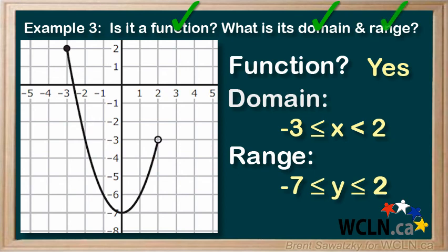And the range is between negative 7 and 2. With them both being inclusive points. So, we would say that y is equal or greater than negative 7 and equal or less than 2.